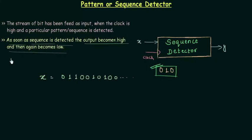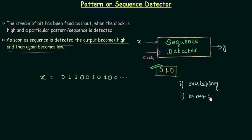We have two possibilities. The first is when we consider overlapping, and the second is when we do not consider overlapping. You might be wondering what overlapping is — it is involved when we check the bits.